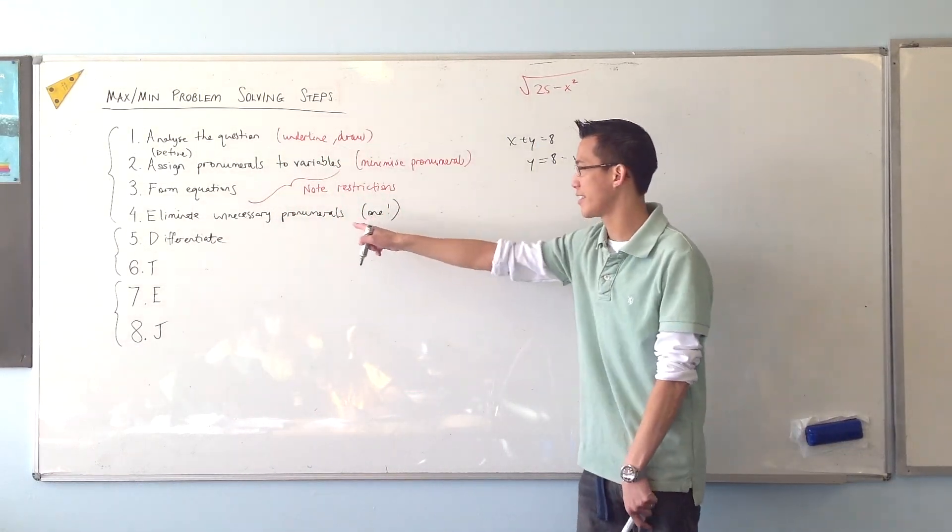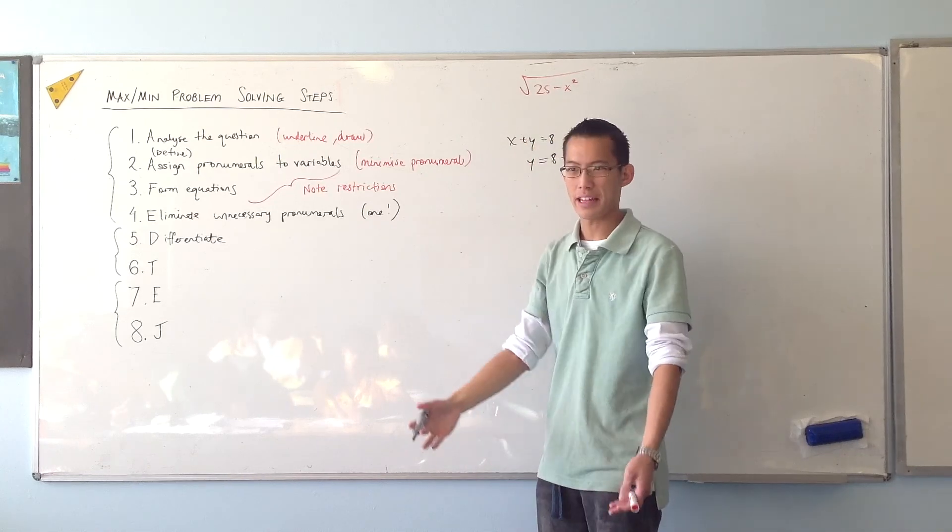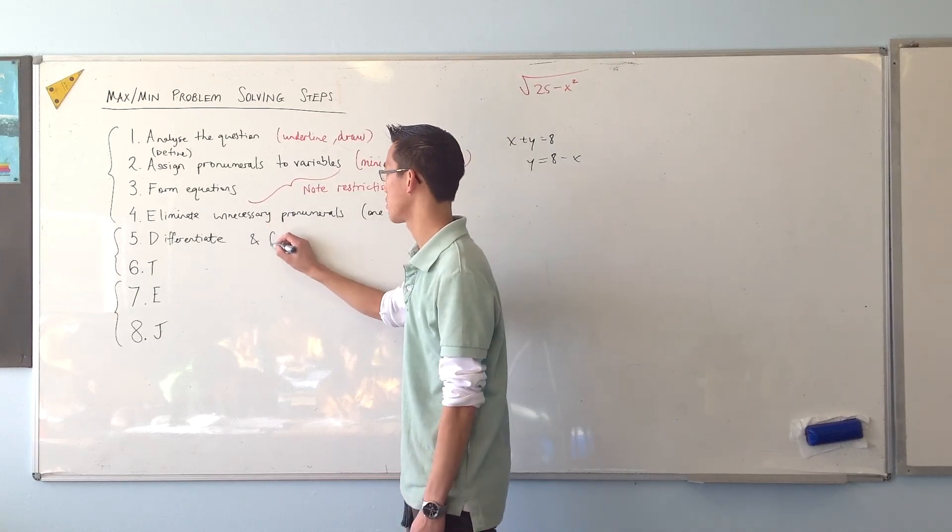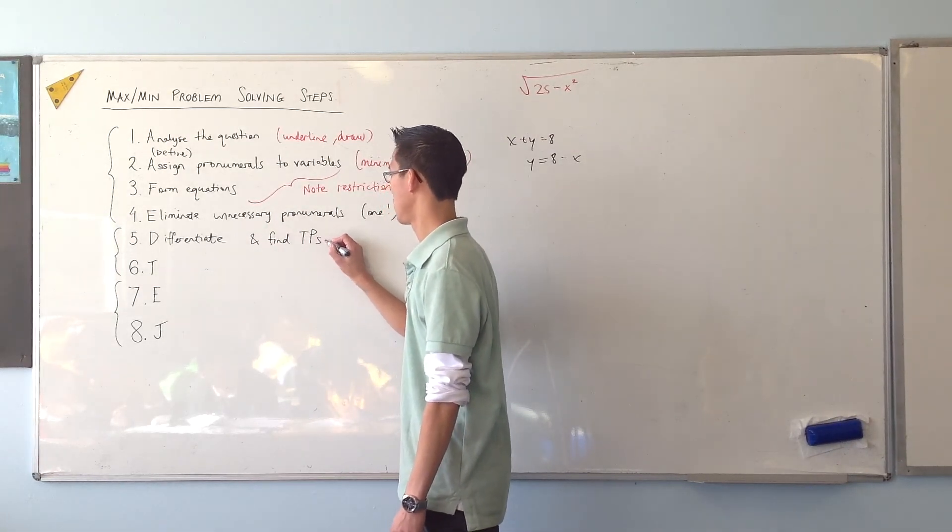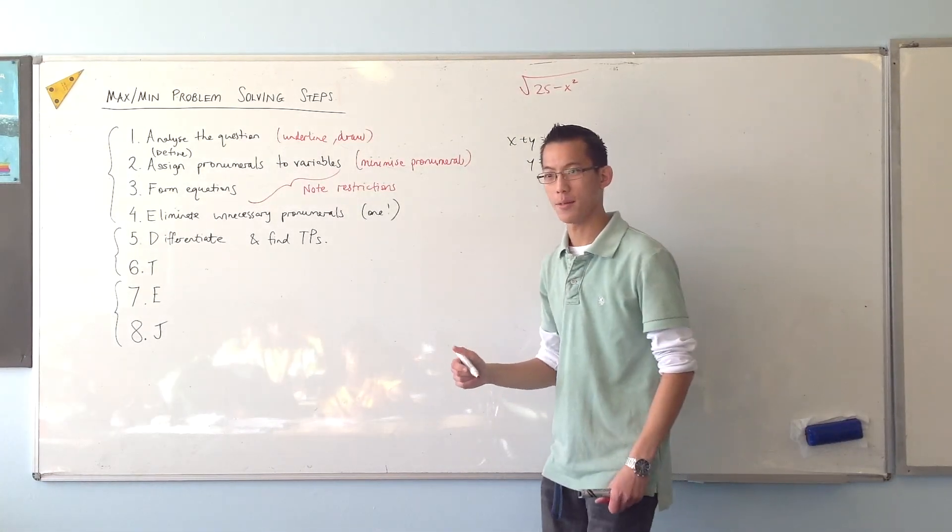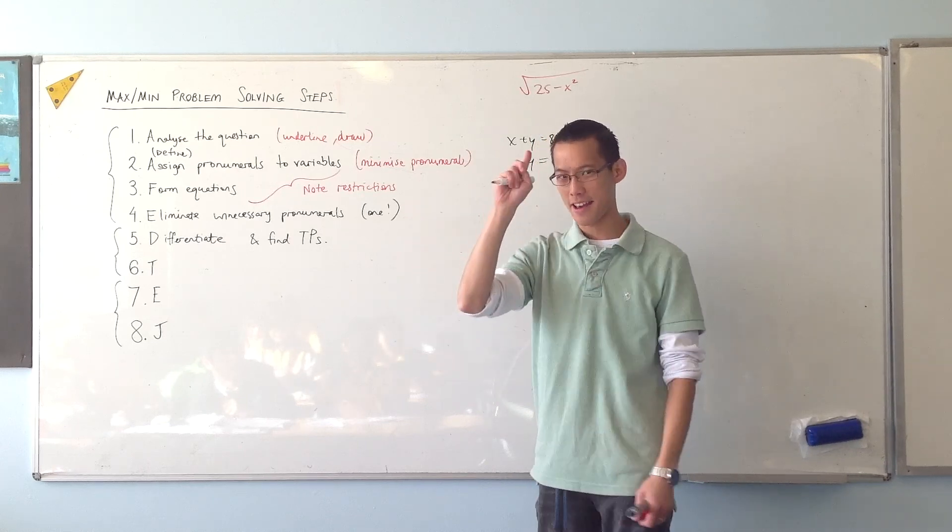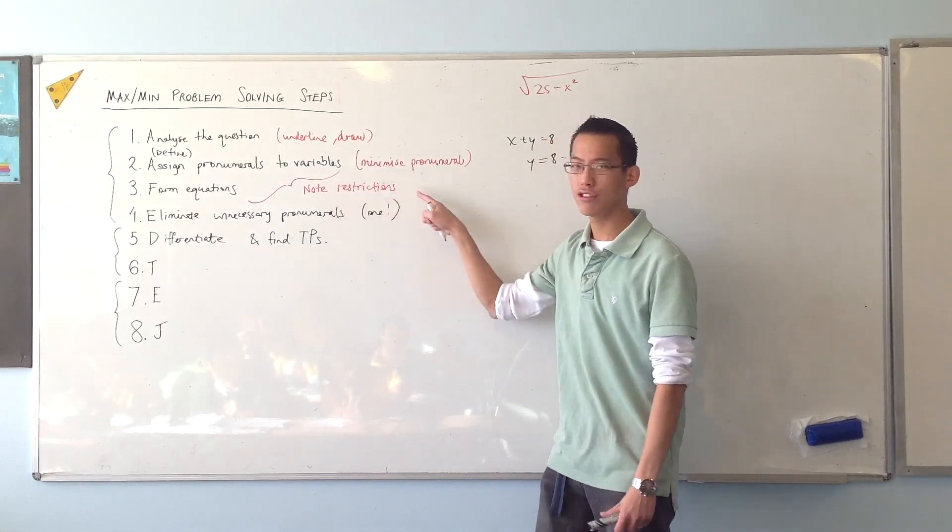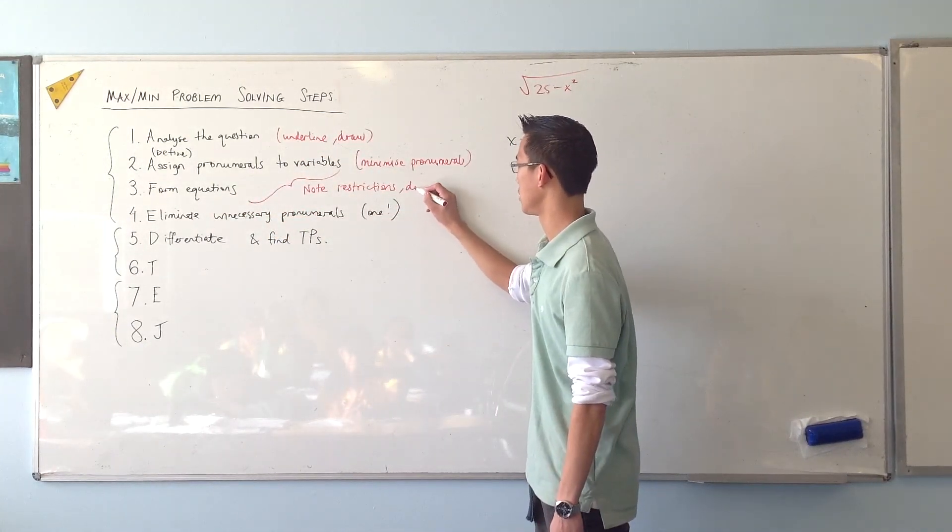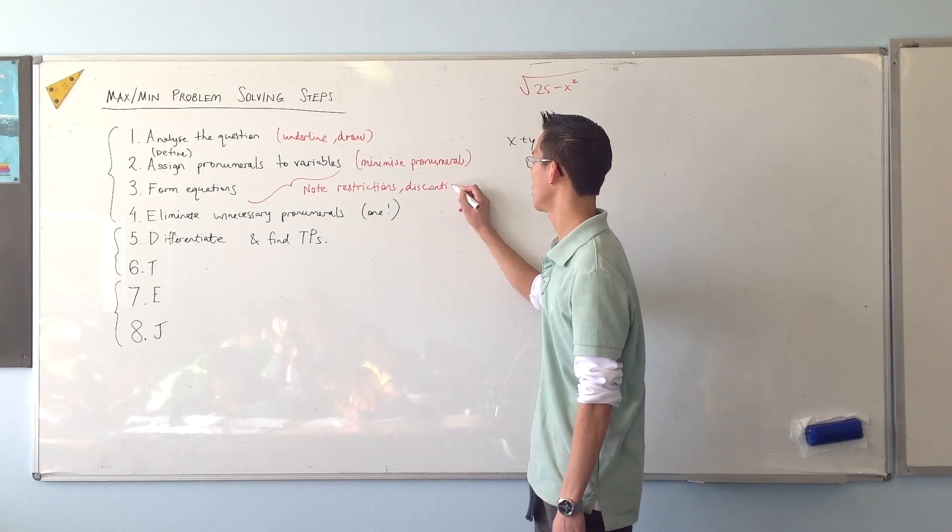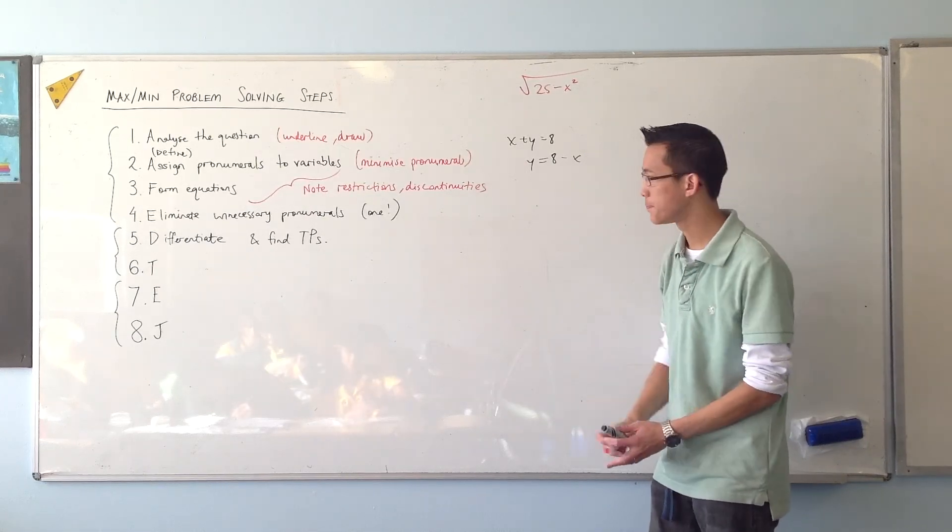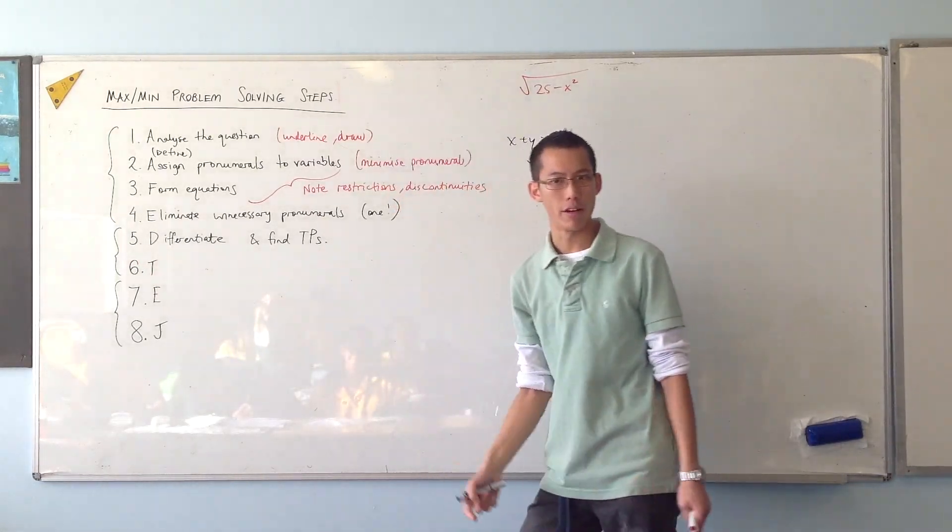So the point of getting just one pronumeral, I think we had like dn or n in terms of y, it's so that you can differentiate and find the turning points. Oh sorry, I missed something earlier. I missed something which is up here. Not only should you note your restrictions when you do these two, but when you've got your equations, you should also note discontinuities. They're quite rare to be honest, but you still have to watch out. Sometimes you'll get them, and they'll come into play later on.